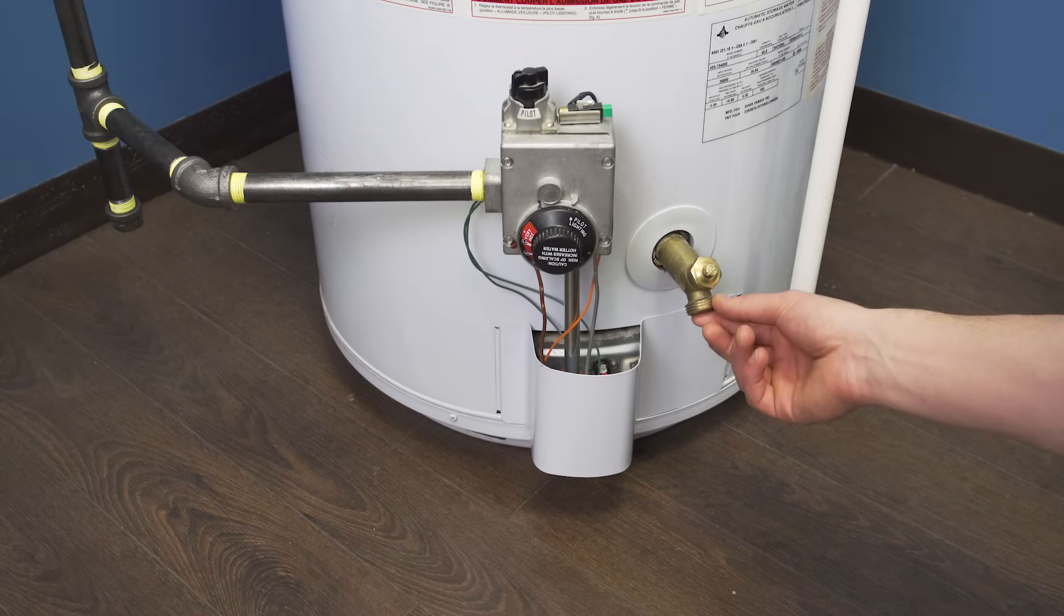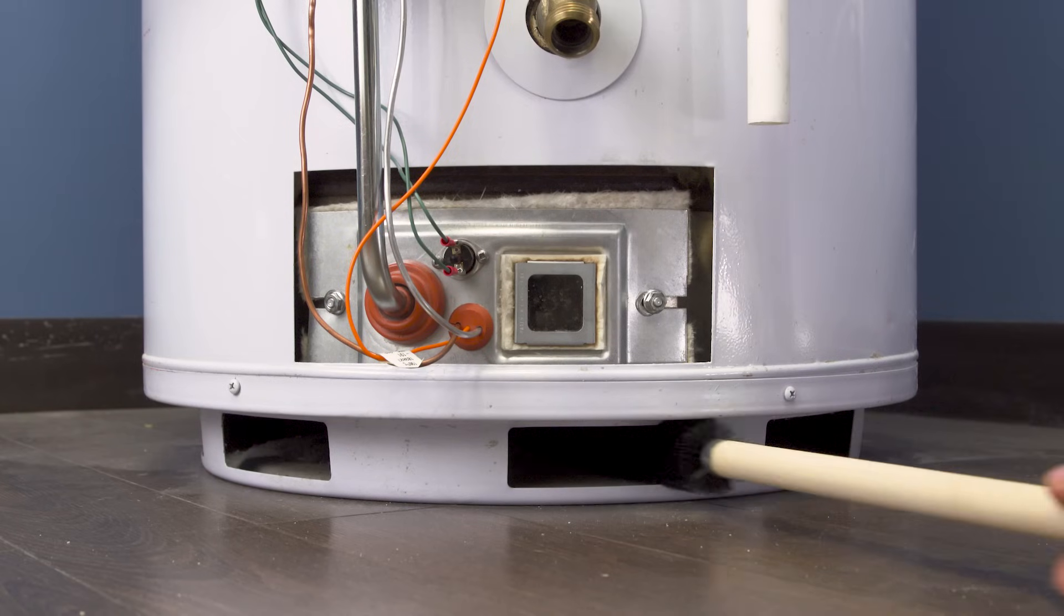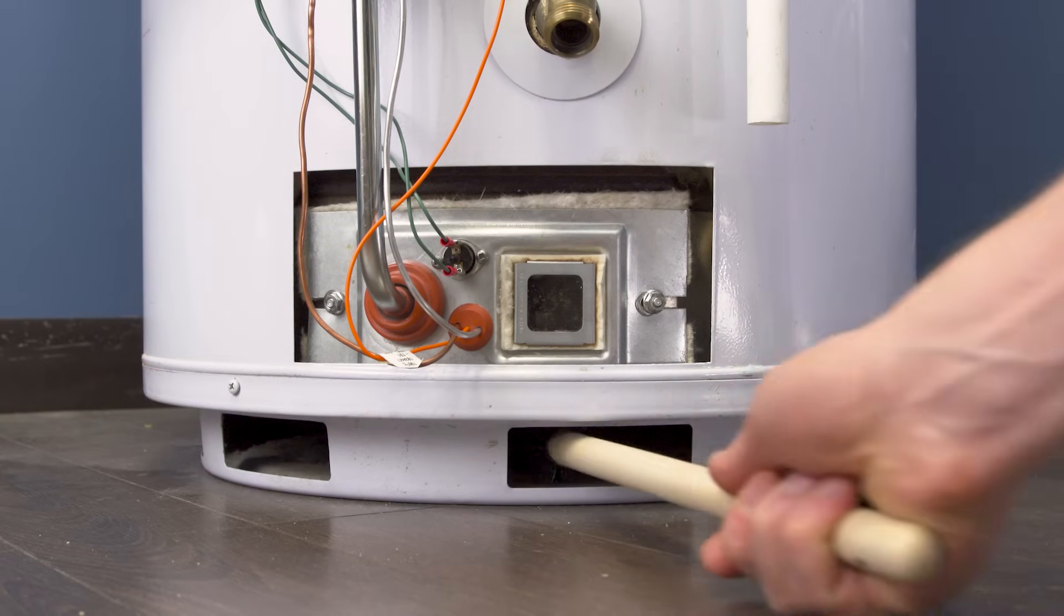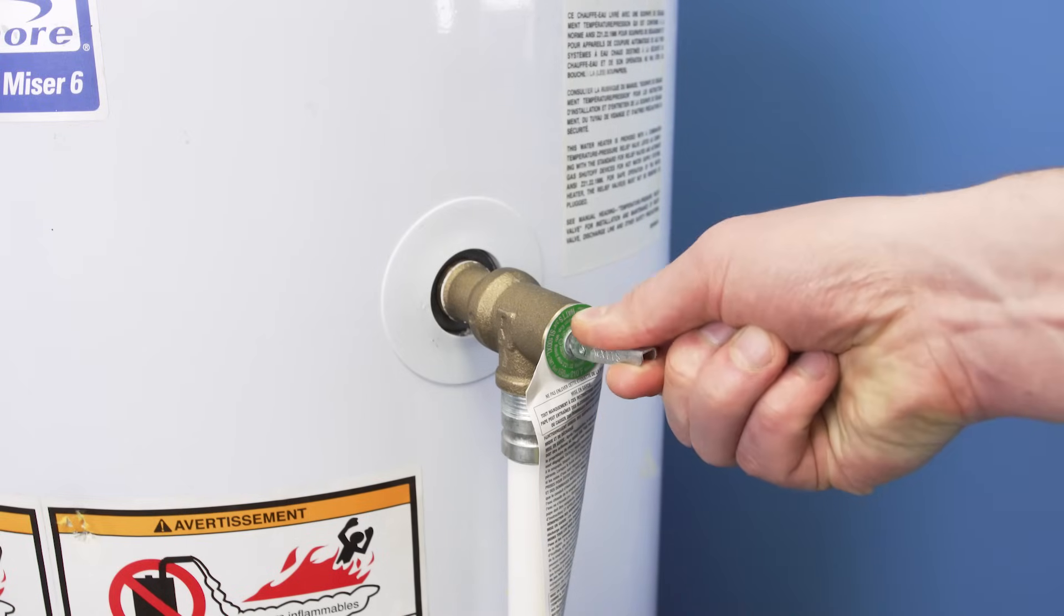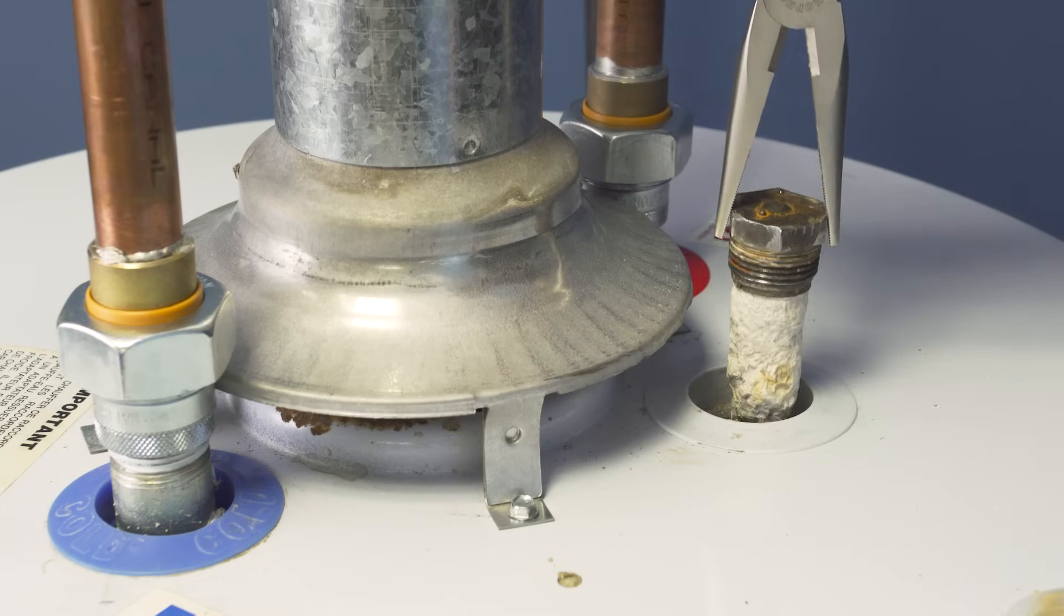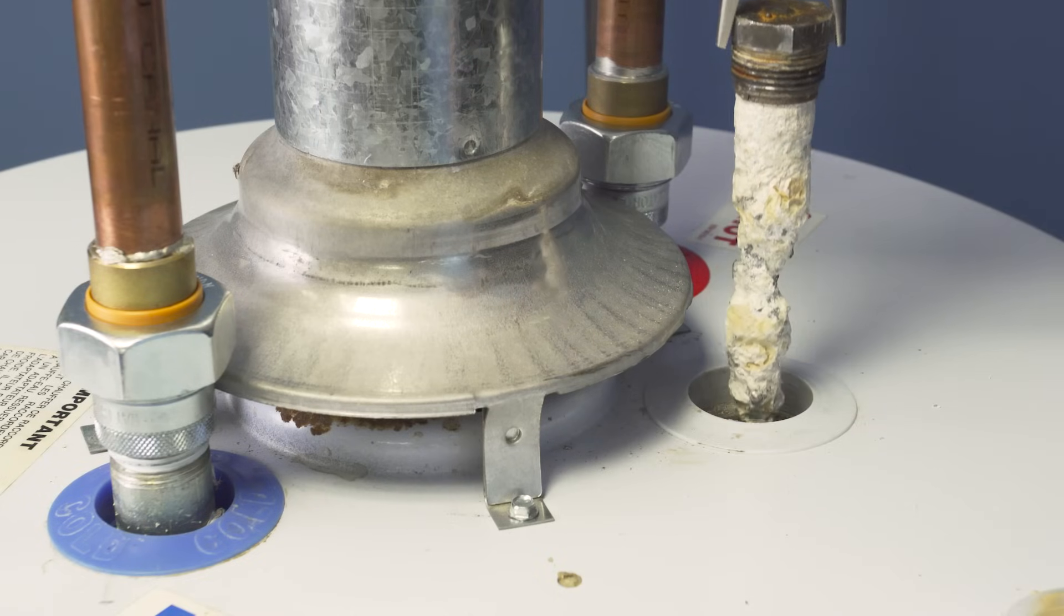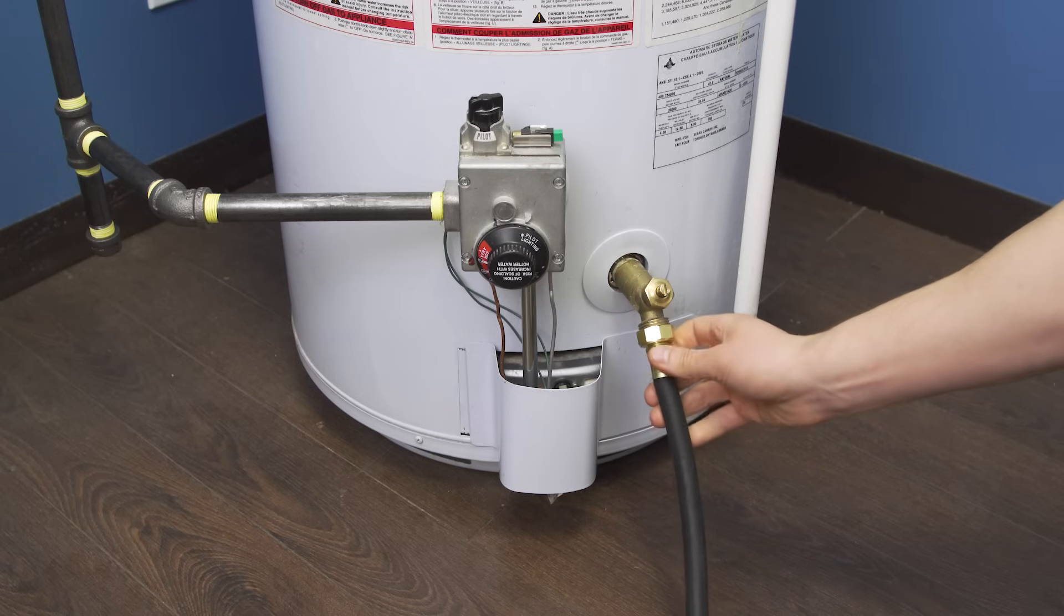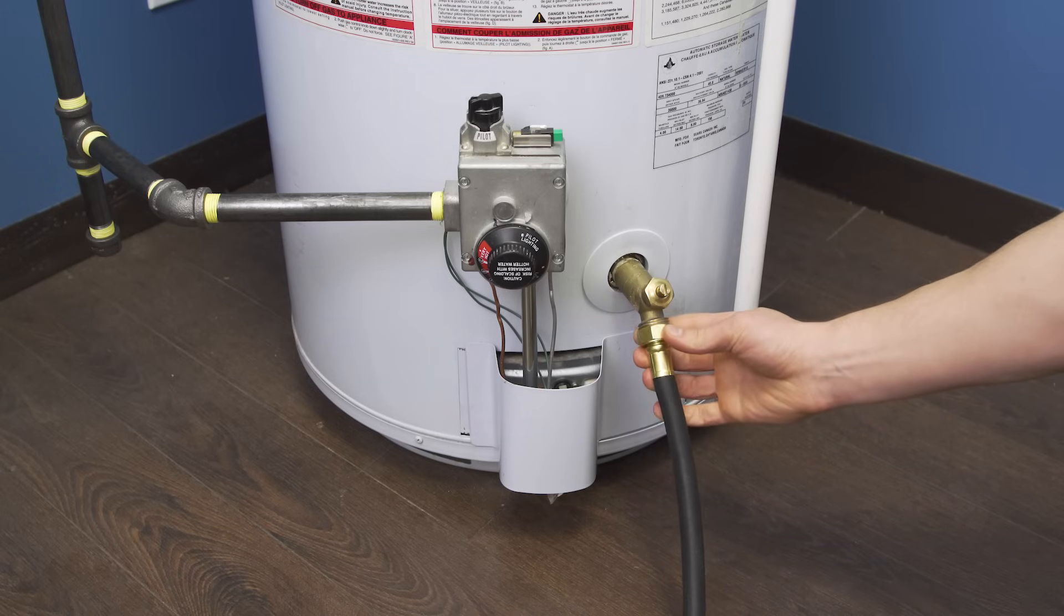First we'll look for leaks, and then we'll check the air flow. Next we'll test the pressure and temperature relief valve. Then check the anode rod to see how corroded it is. Finally we'll drain and flush the tank to remove the sediment.